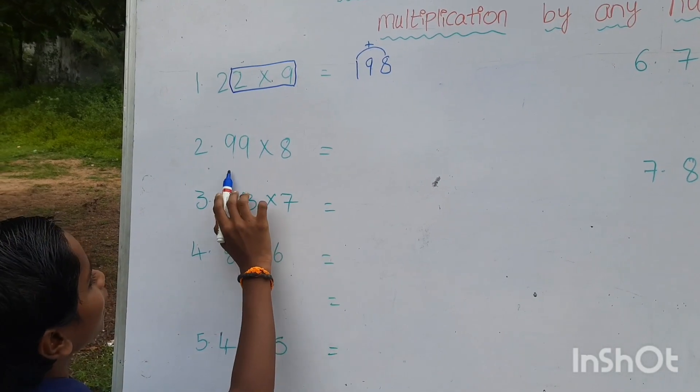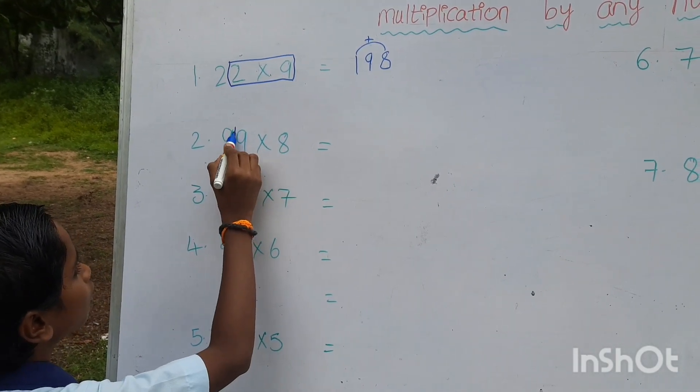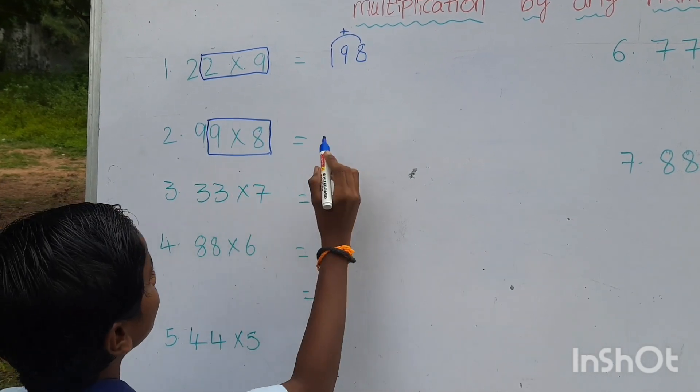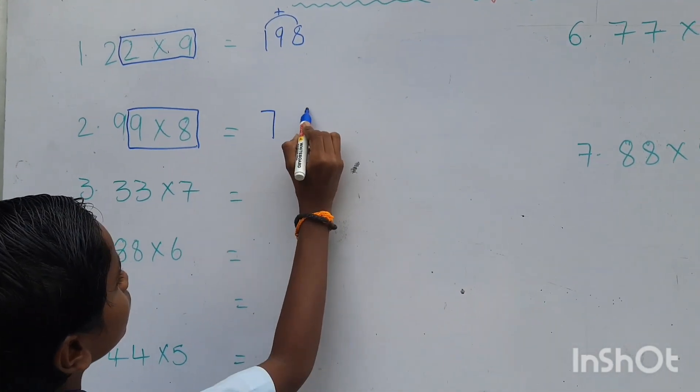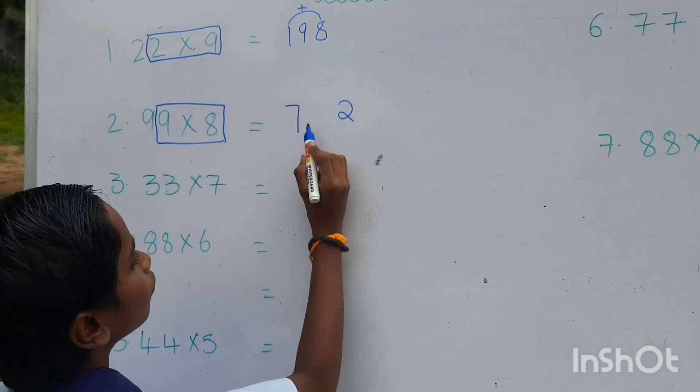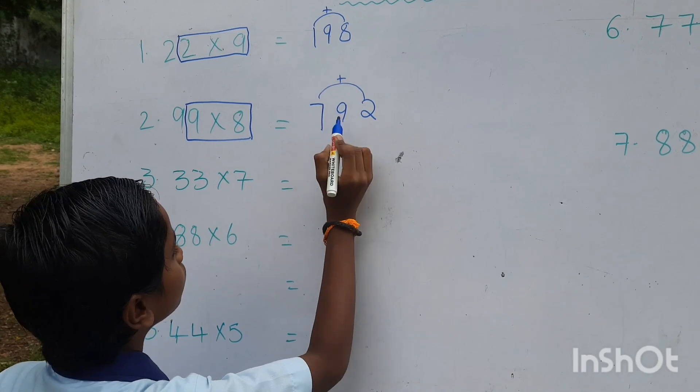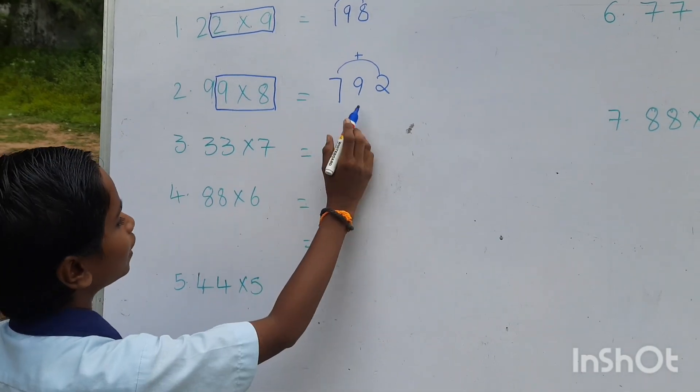Second one, 99 into 8. We want to multiply these both numbers. 9 8s are 72. We want to add these both numbers. 7 plus 2 equals to 9. 99 8s are 792.